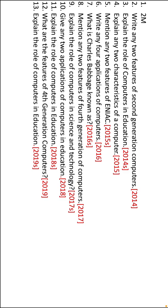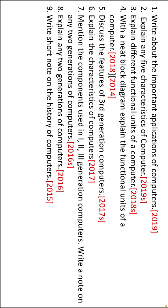Remember the characteristics and applications of computers in different generations — they can ask you to write a note on any generation. This brings us to the five-mark questions. Almost all five-mark questions ask about applications, characteristics, and block diagrams. The third and fourth questions are about the block diagram, the second and sixth are about characteristics, and the remaining questions are about generations. In 2015 they also asked to write a note on the history of computers.